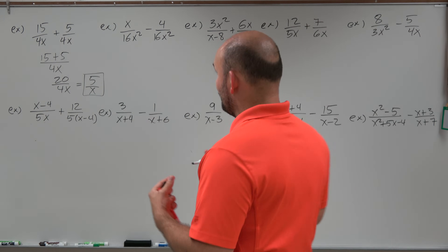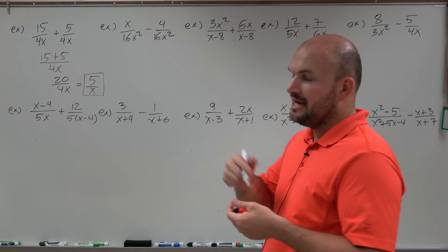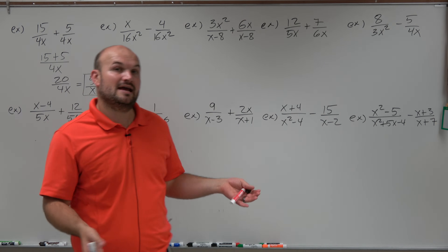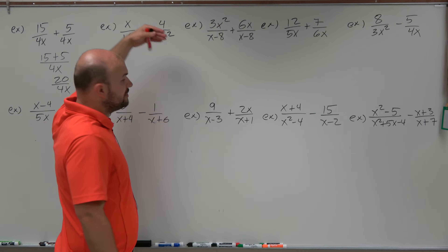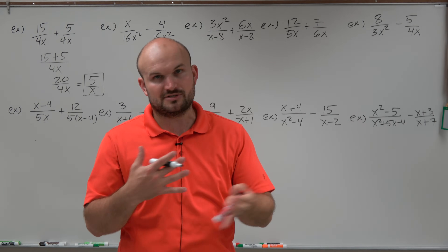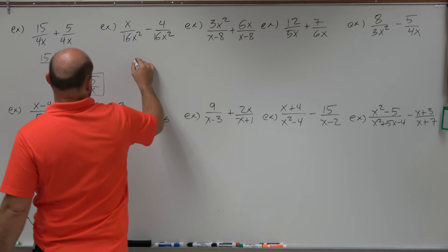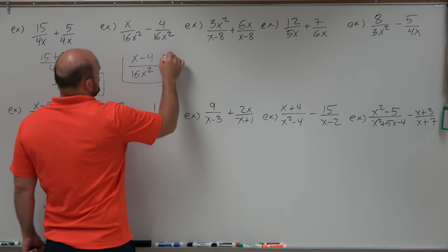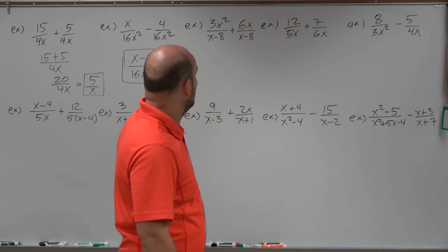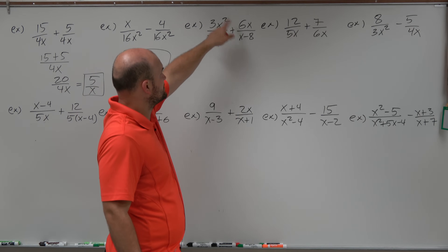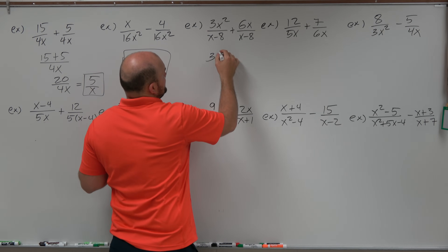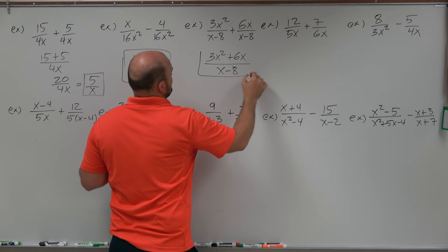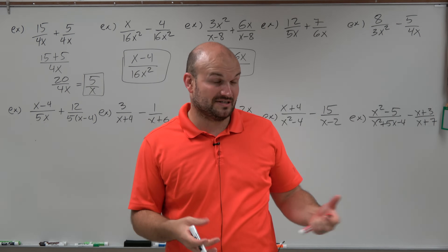I'll be using the red marker as well and put a box over my final answer. Over here, 16x squared is the same for both denominators. However, the numerators are not like terms — one is a variable, one is a number — so we can't combine them. So I'll leave this as x minus 4 over 16x squared. In this next example, we have 3x squared and 6x, which can't be combined, so we get 3x squared plus 6x all over x minus 8.